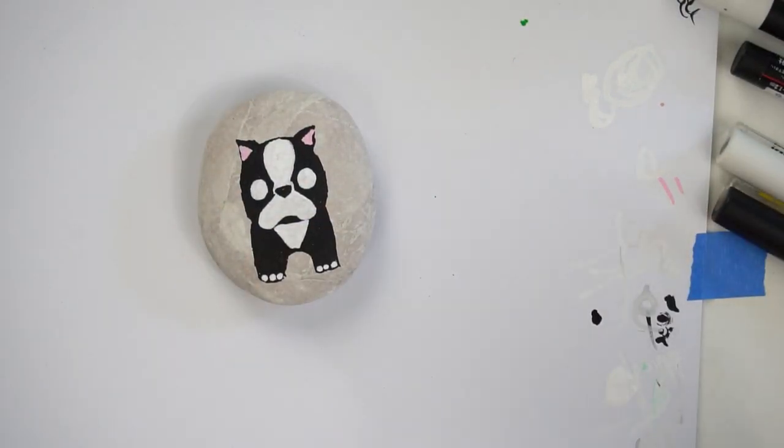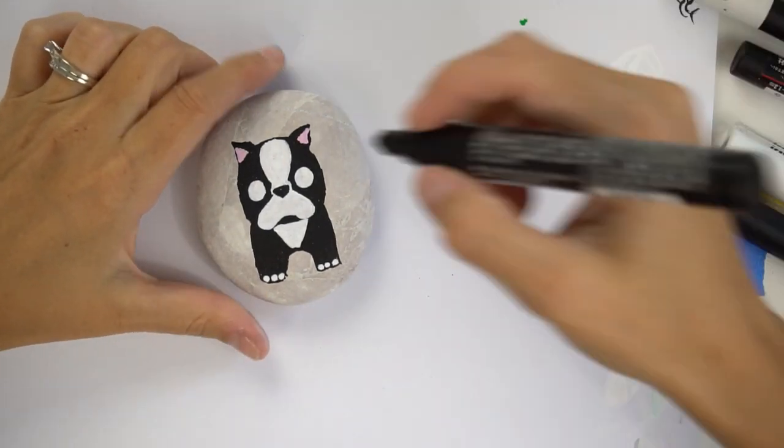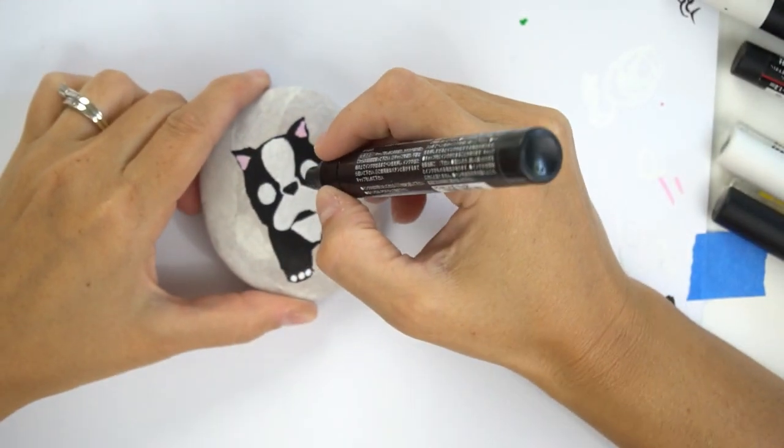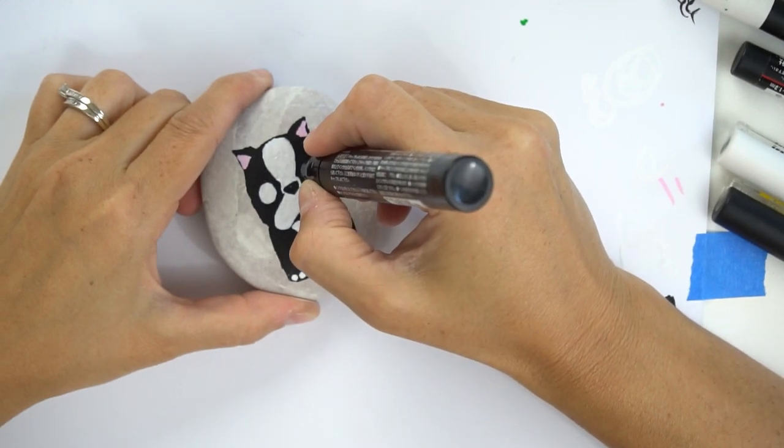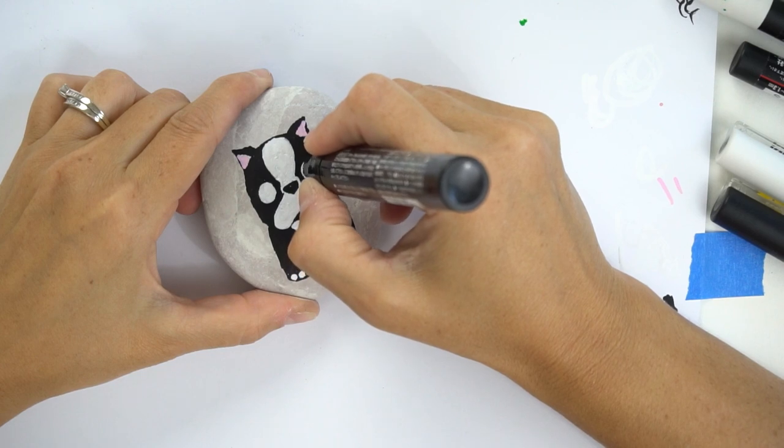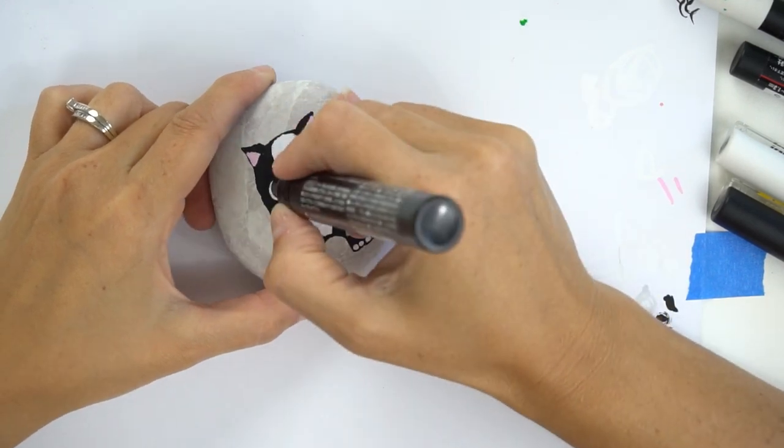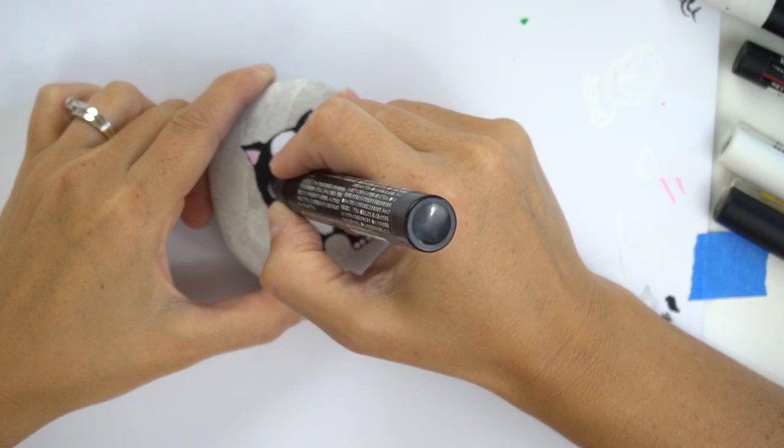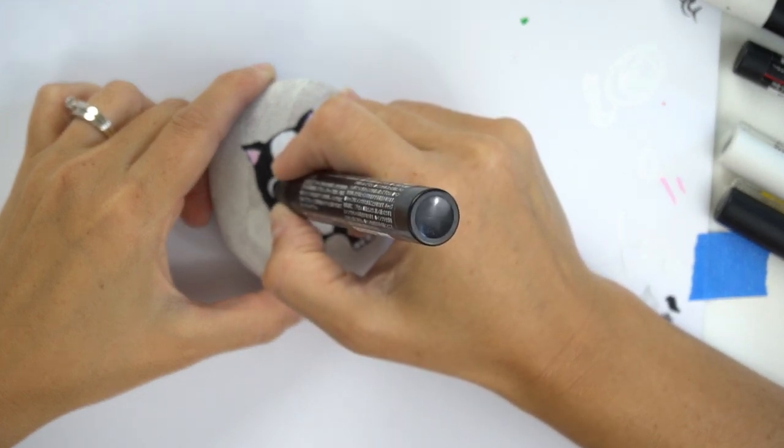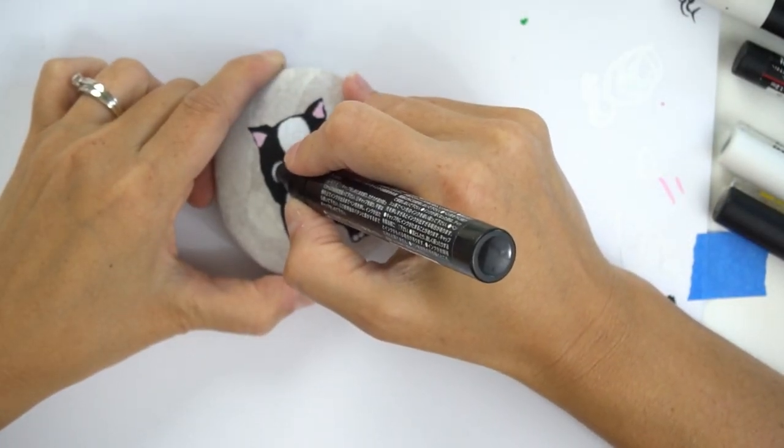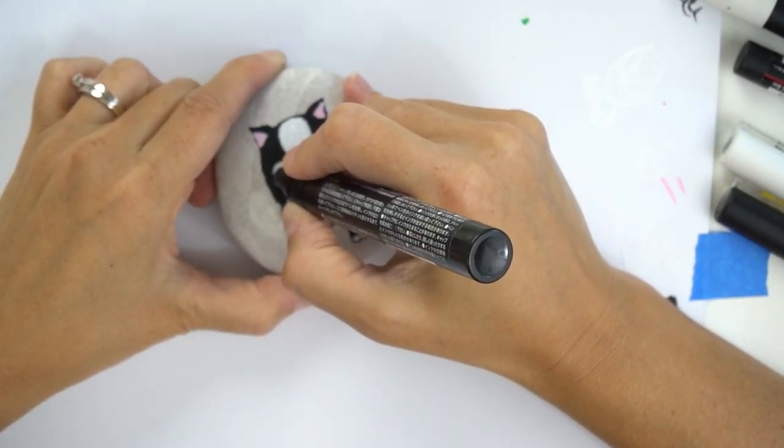My eye whites are nice and dry, so I'm going to go in with my black and give nice big pupils here. You definitely want to make sure your white is dry before you do this, otherwise you're going to end up with gray, which you really don't want.